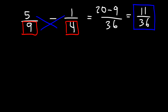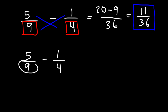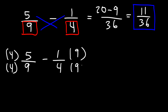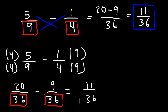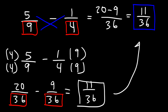Another way to do the same problem is to get the common denominators first before combining the two fractions. 9 times 4 is 36. To get a common denominator of 36, multiply the first fraction by 4 over 4 and the second one by 9 over 9. 4 times 5 is 20, and 4 times 9 is 36. Now that the denominators are the same, combine the numerators: 20 minus 9 is 11. So we get the same answer: 11 over 36.